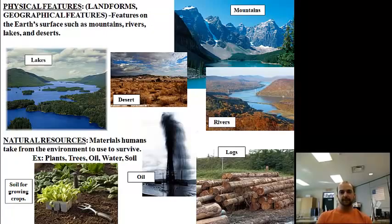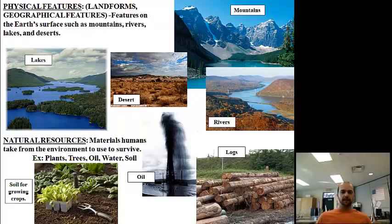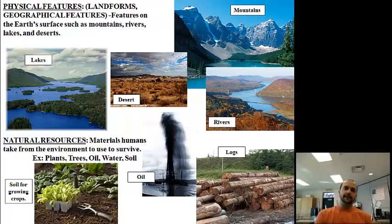Natural resources are materials that humans take from the environment to use to survive. We use the soil for growing food and crops. We use oil deep in the ground to power our cars and cities. We use logs to build homes and to heat them — many of you probably have a wood stove, which is a good idea now that oil is so expensive and there is a lot of lumber in this area.